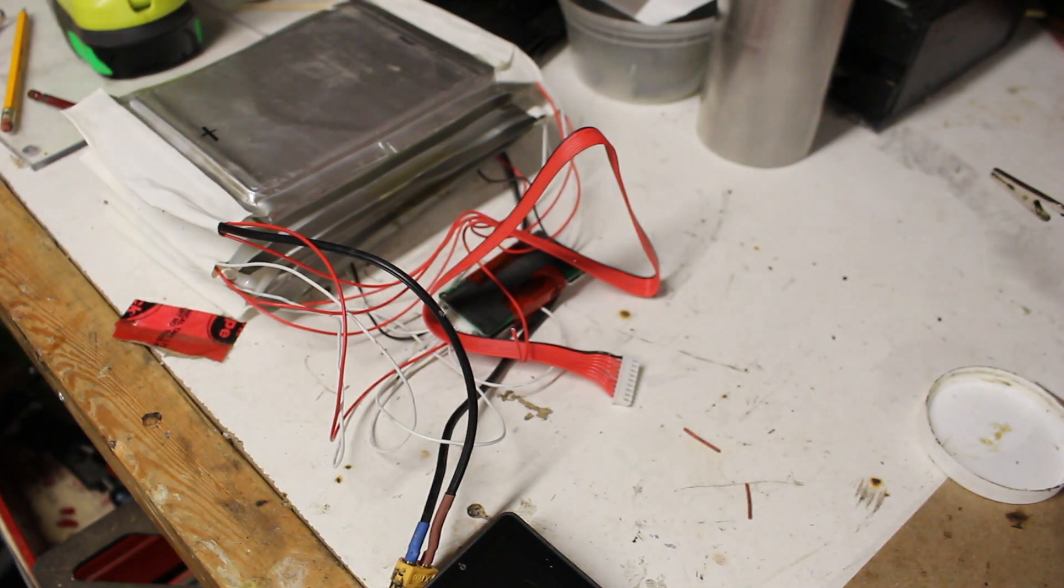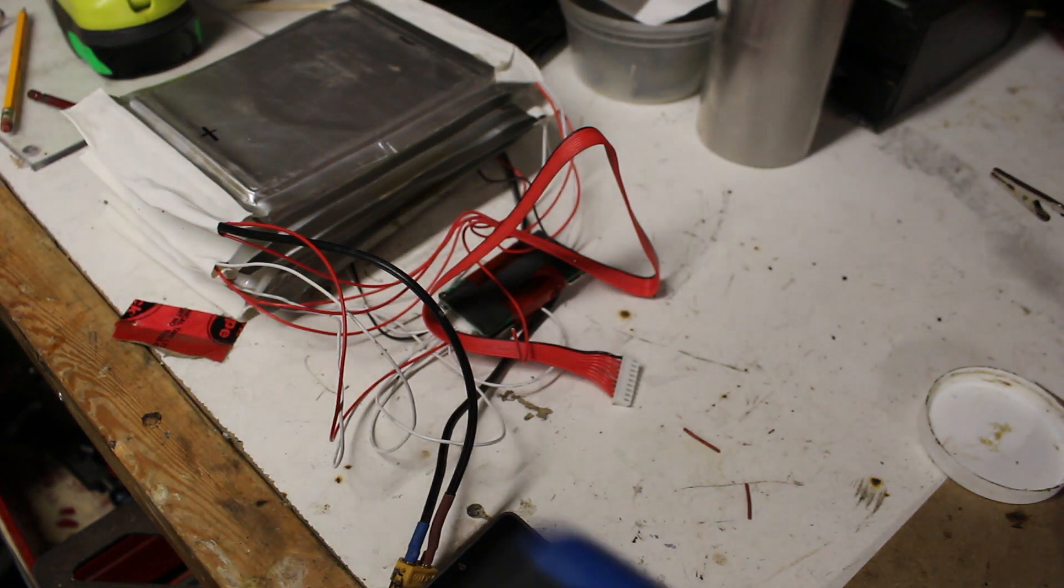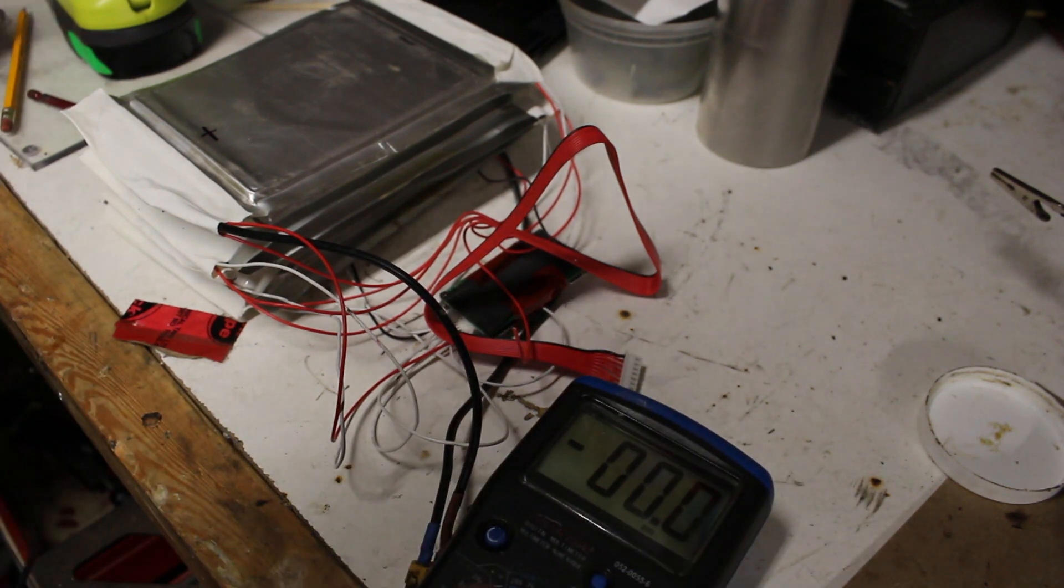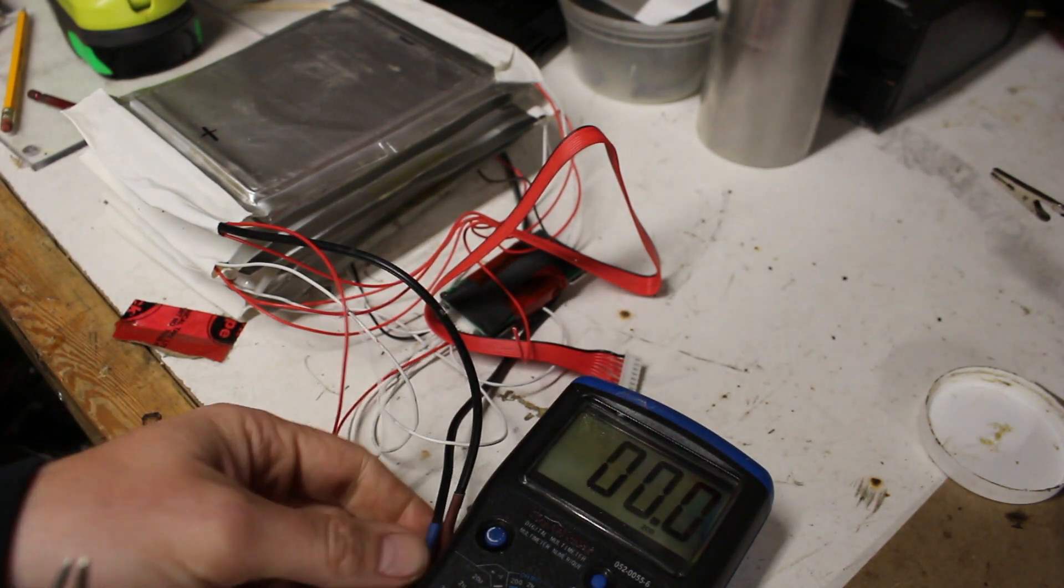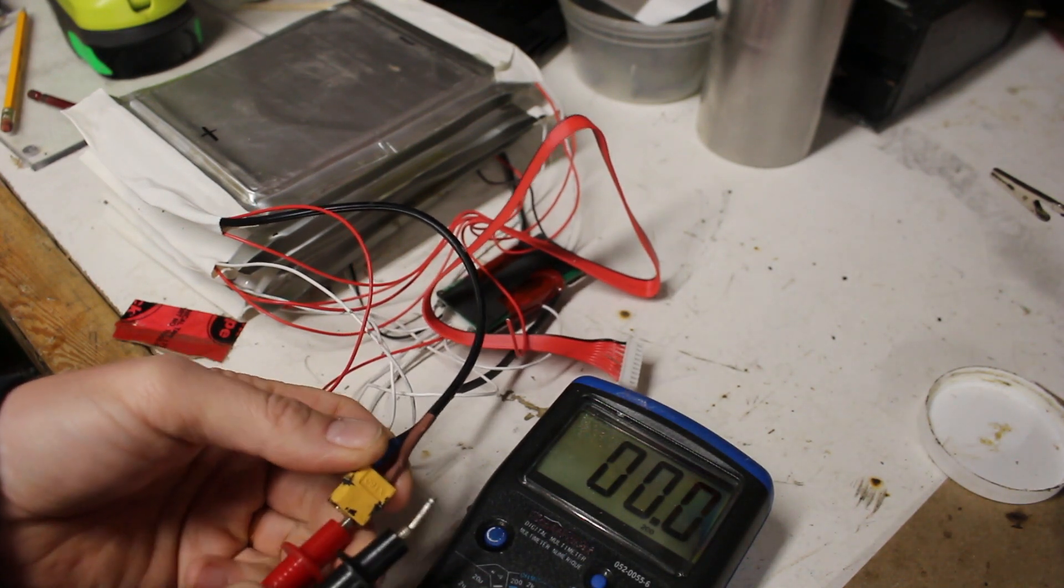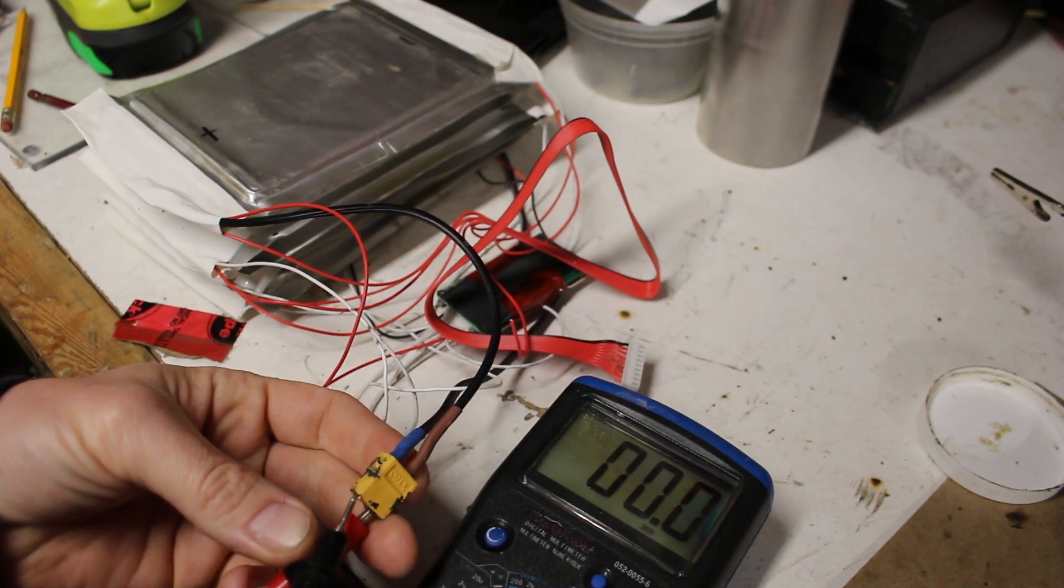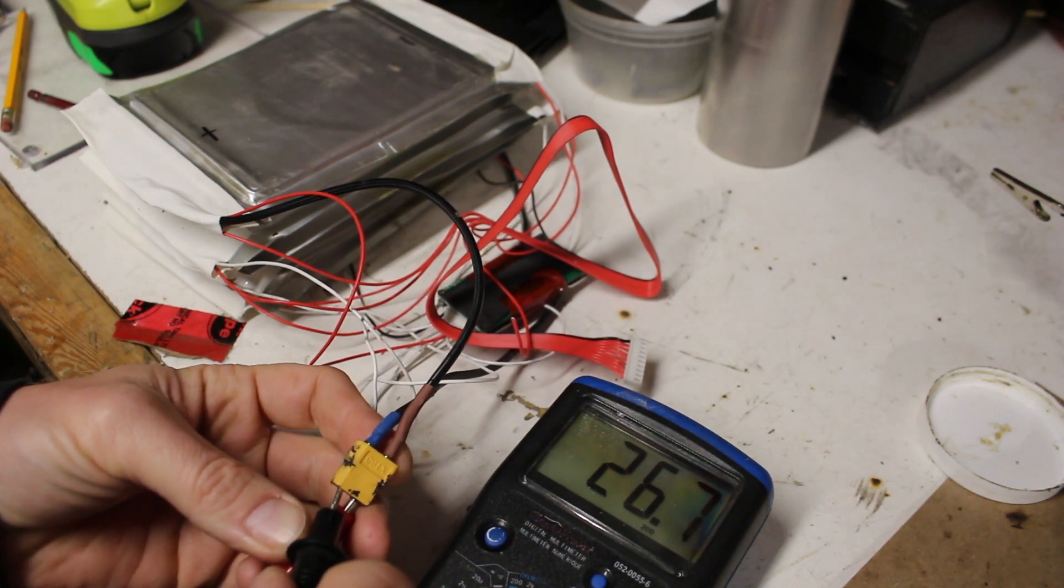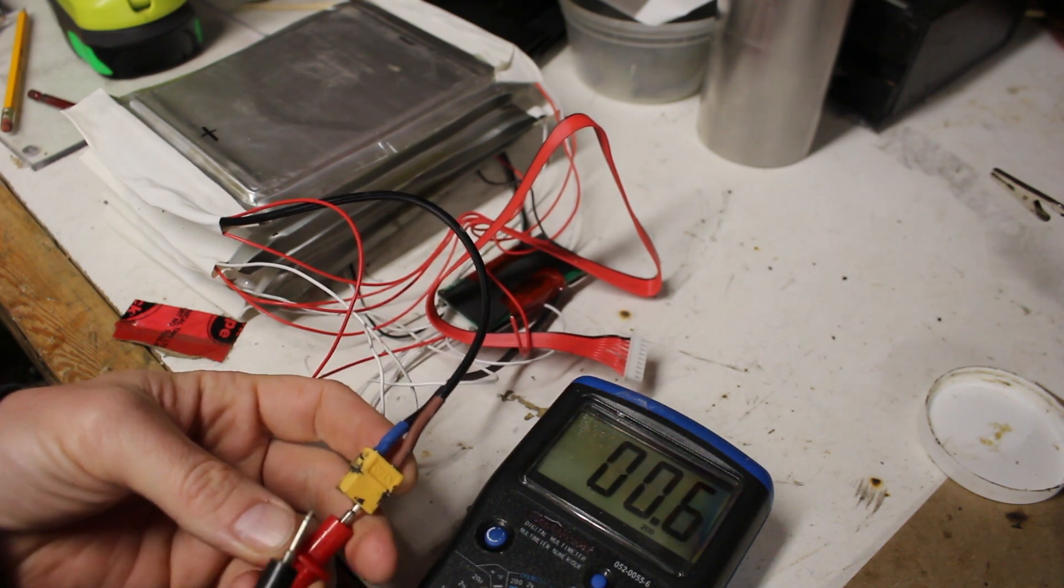First thing I'm going to do is check the battery output. Make sure that we're getting the expected voltage and that all the cells are connected and accounted for. That's 26.7 volts, that's correct.